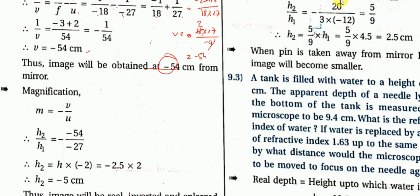Now find magnification. M = minus v by u. We already calculated v = minus 54 and u = minus 27. Minus divided by minus gives plus, so 54 divided by 27 gives 2, but with the negative sign: M equals minus 2.